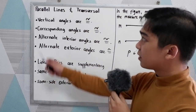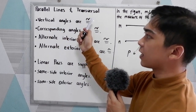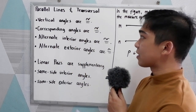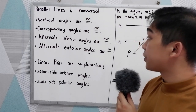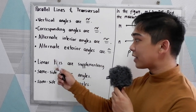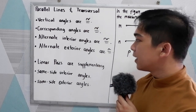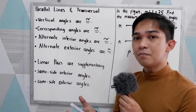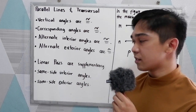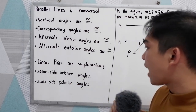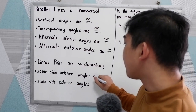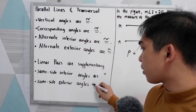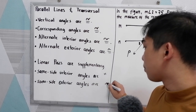Let's start with: if you have a parallel line cut by a transversal, vertical angles are congruent, corresponding angles are congruent, alternate interior angles are congruent, alternate exterior angles are congruent, linear pairs are supplementary, same side interior angles are supplementary, and same side exterior angles are also supplementary.